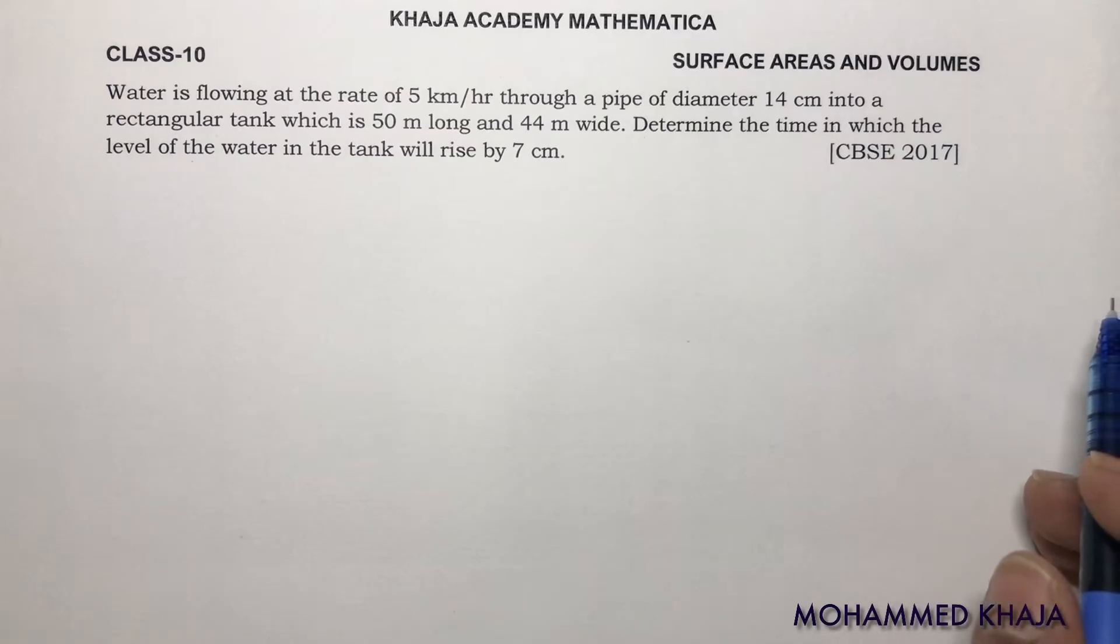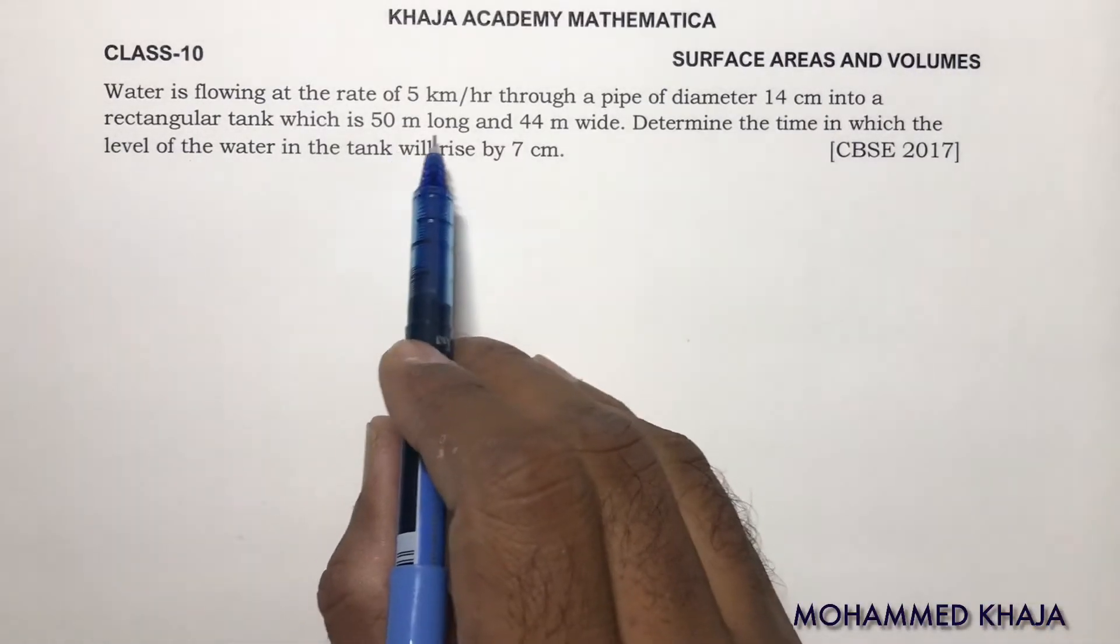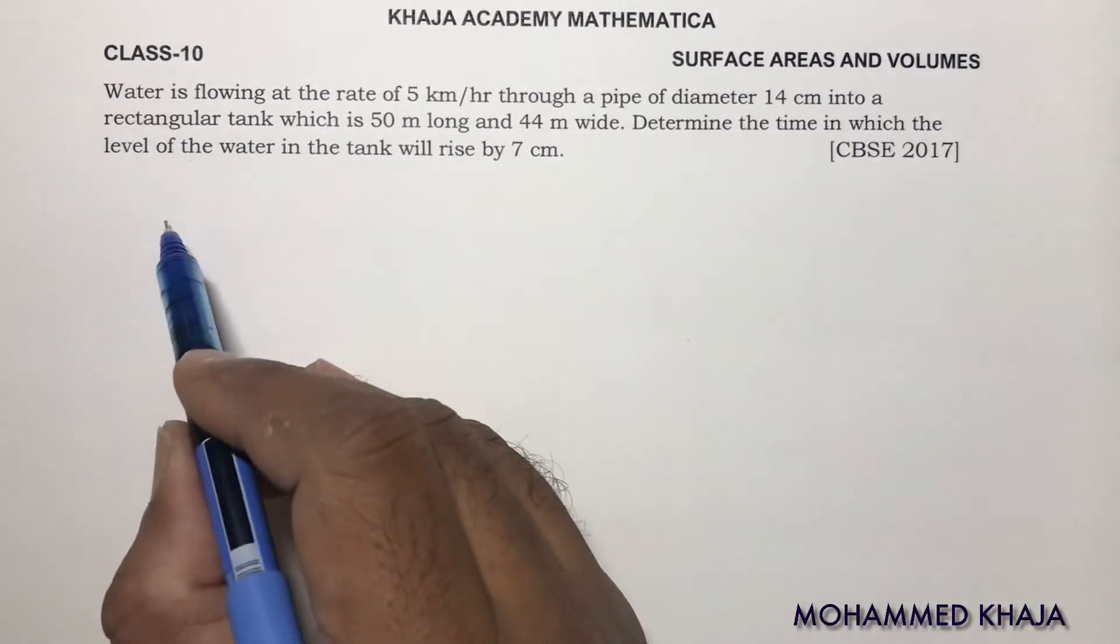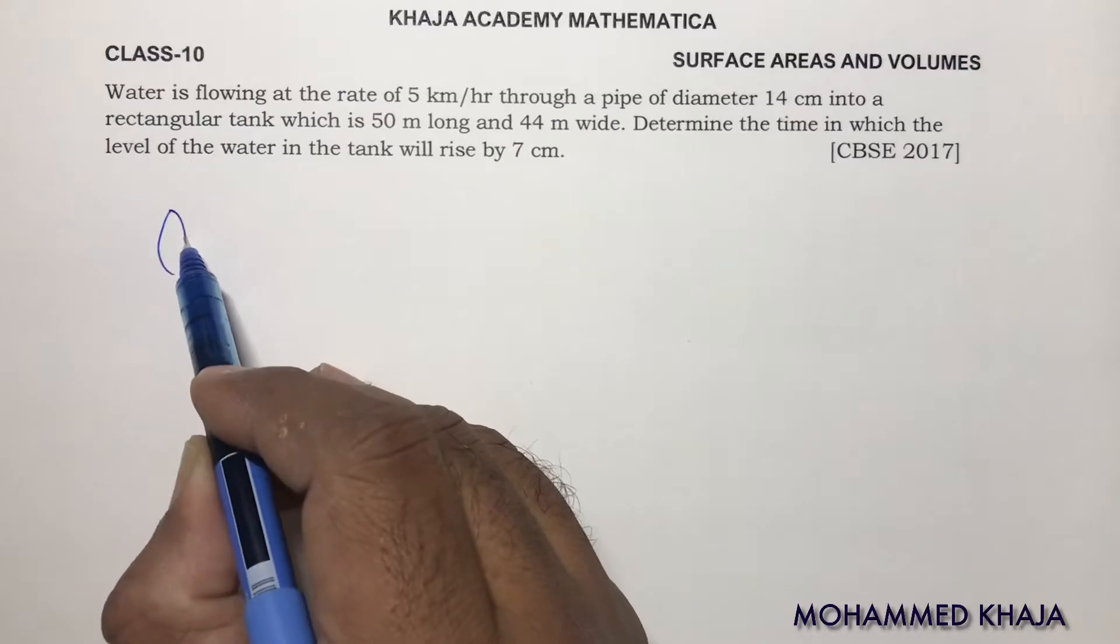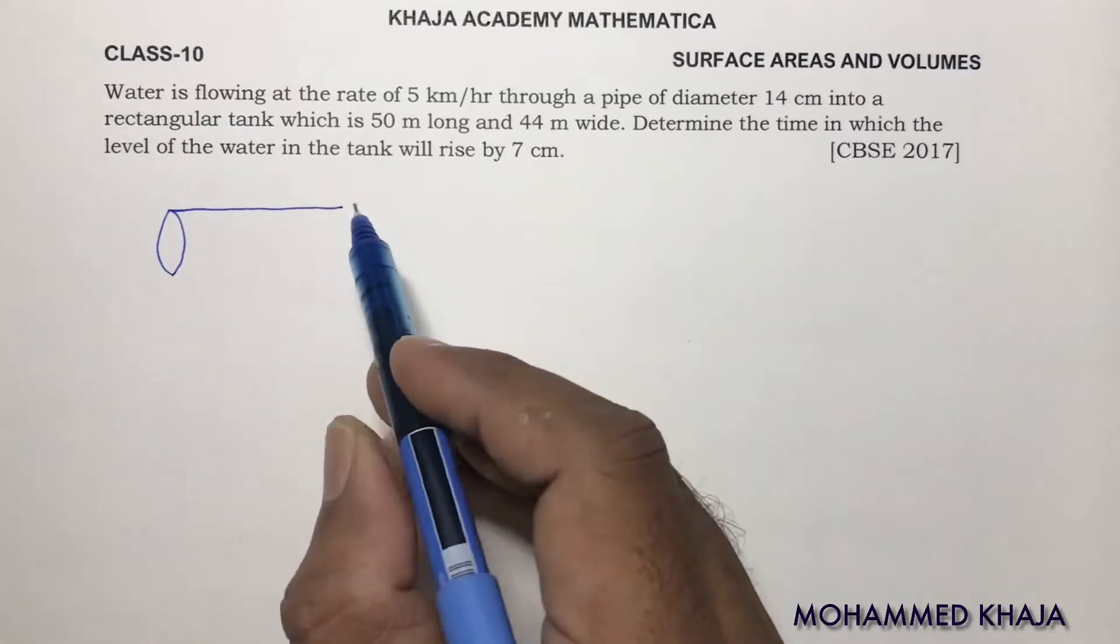Water is flowing at a rate of 5 km/hr through a pipe of diameter 14 cm into a rectangular tank which is 50 meters long and 44 meters wide. Water is flowing at a rate through a cylindrical pipe.